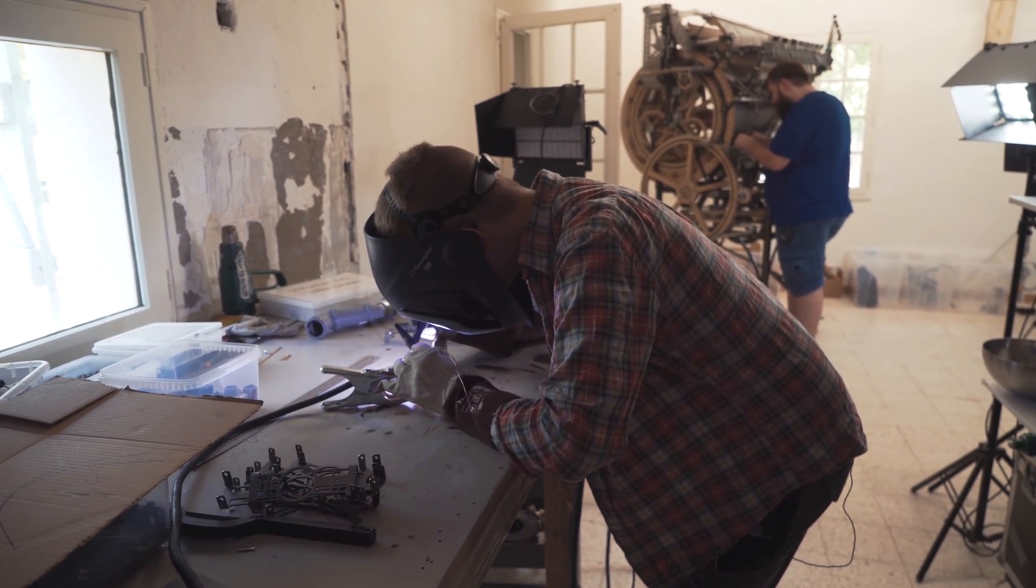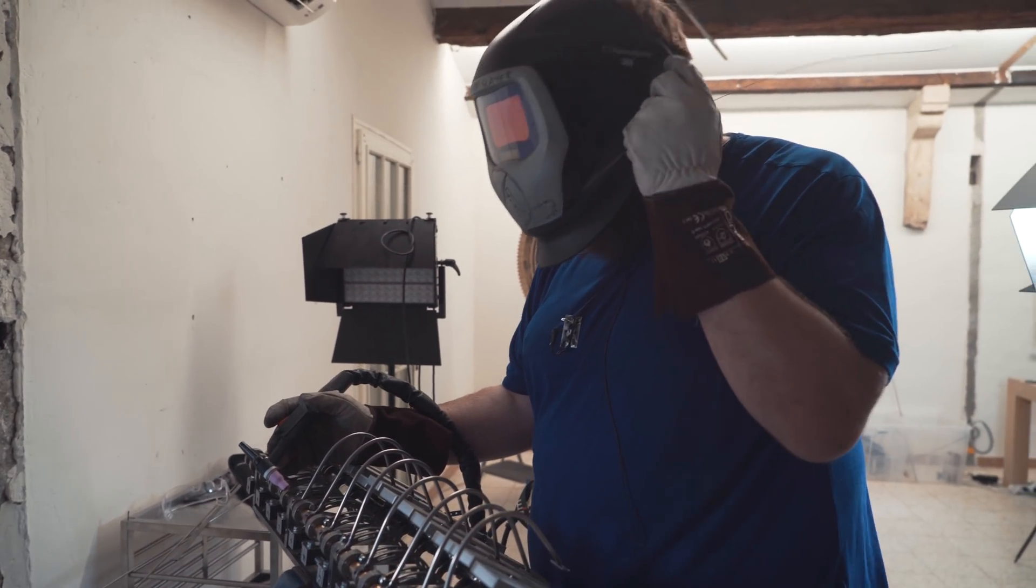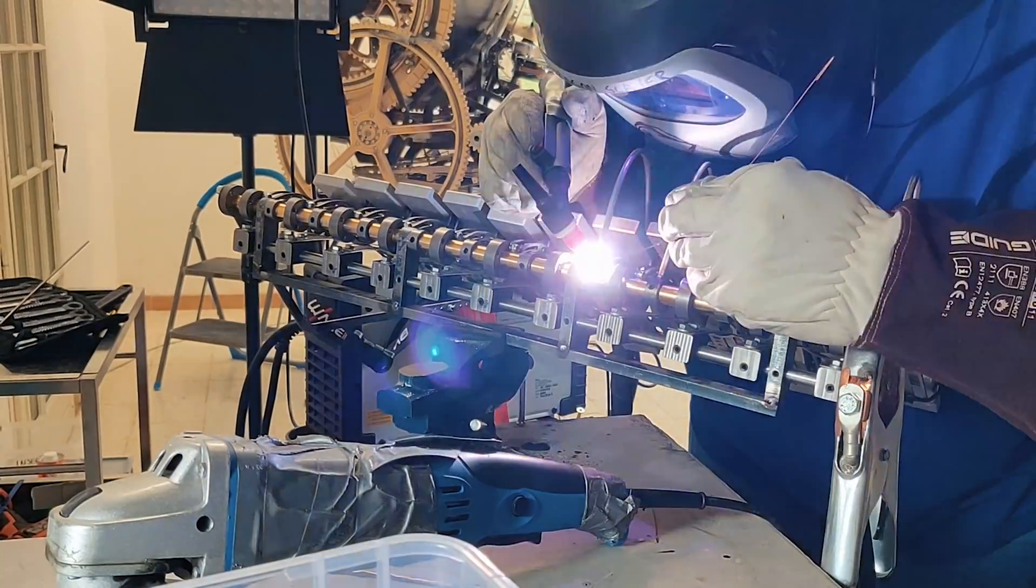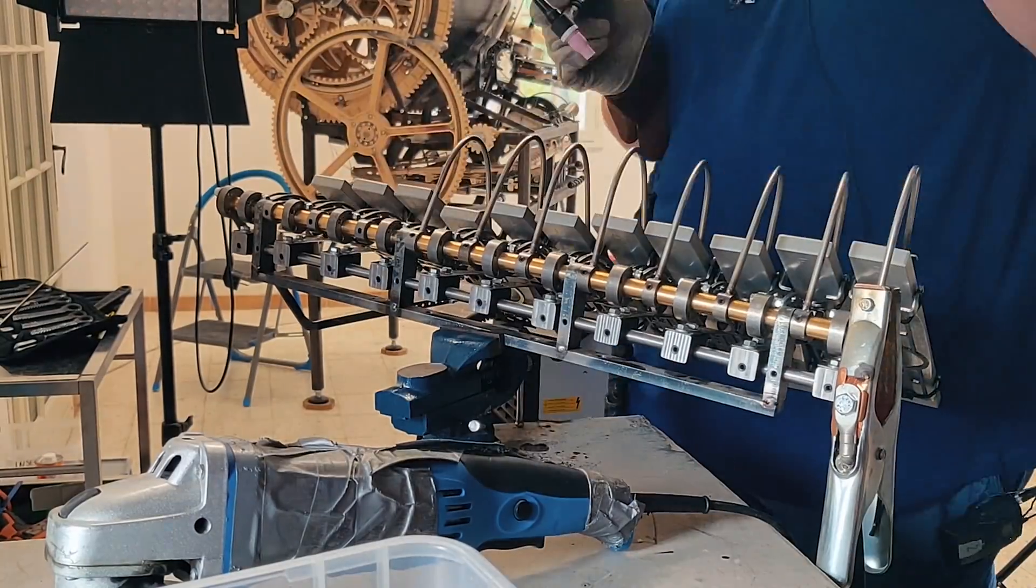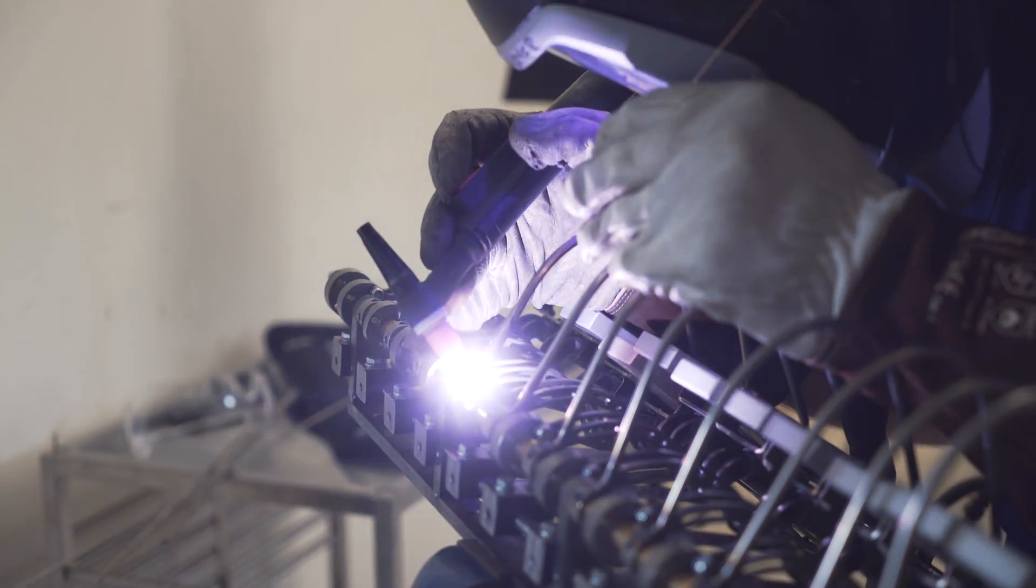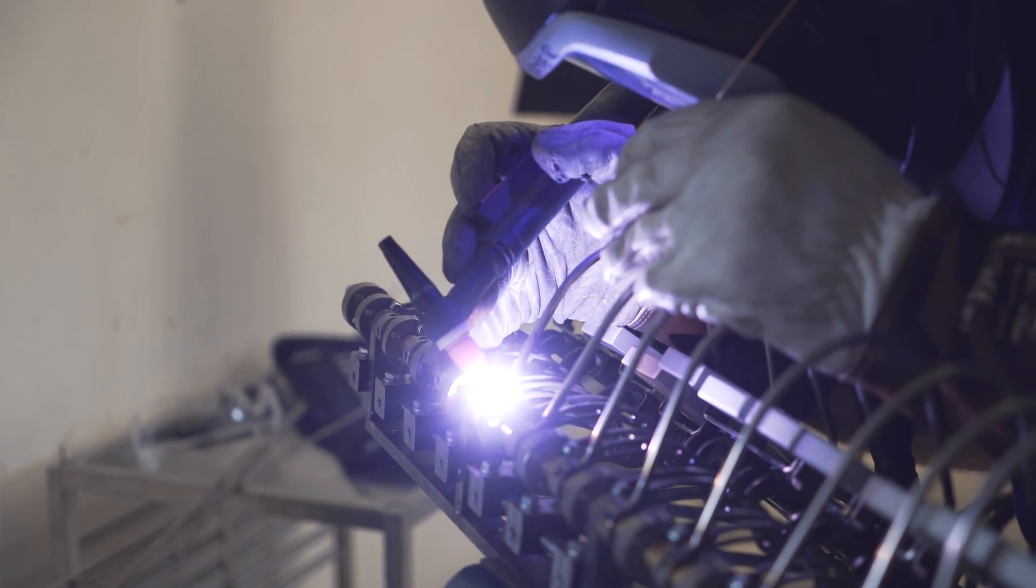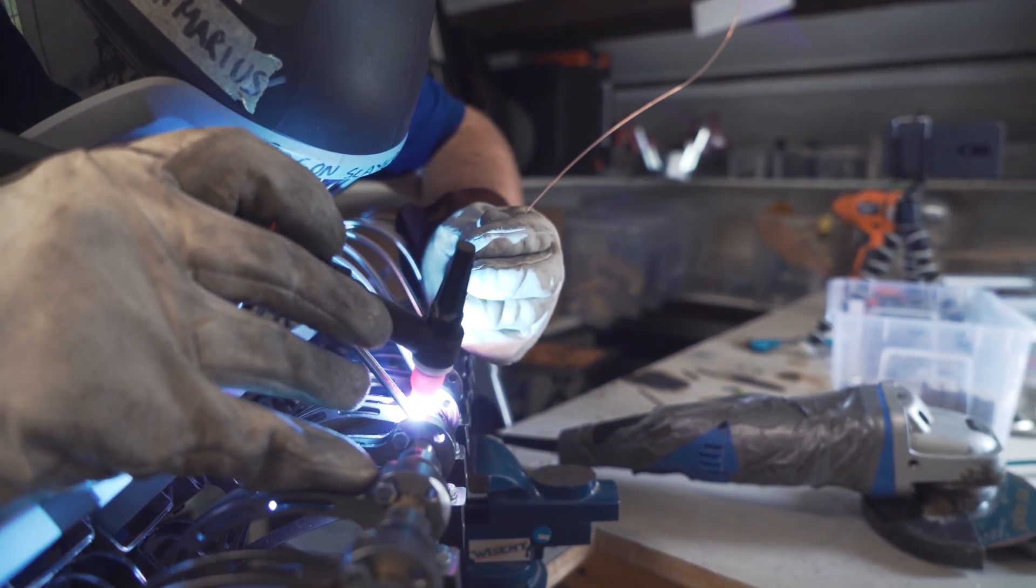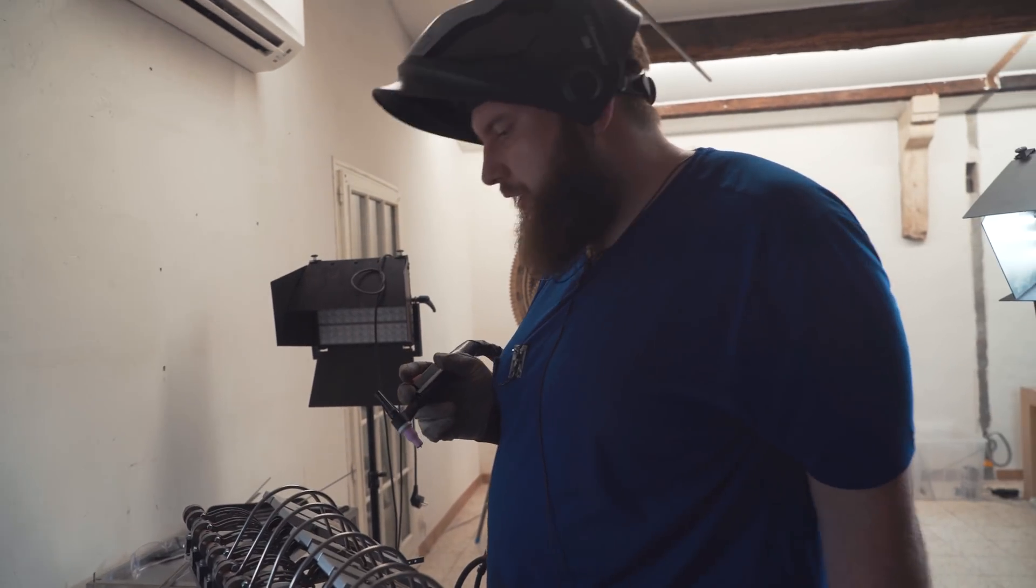So after we welded on these plates on both the holders for the felt, now I'm welding the holders to the shaft here so that they're part of the Marble Machine. Then the last step will be to add the felt and then the dampeners are finished.